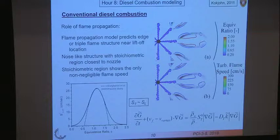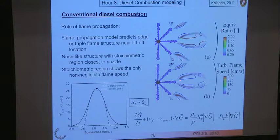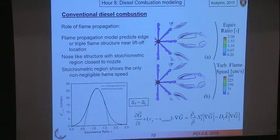Looking at the turbulent flame speed used in the G equation, it's pretty much zero everywhere except right at the tip, where it has a value of around 150 centimeters per second — which is what is required to keep that flame sitting there. So basically the G model helps you understand the edge flame or triple flame structure near the lift-off location. And it's basically the only region in the jet where the G equation predicts any flame speed at all.